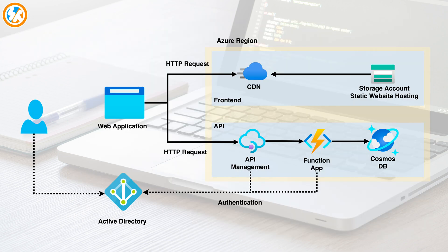Let's quickly go through the architecture we are considering. The backend is deployed to an Azure Functions app and is exposed to the public through API Gateway. Authentication is implemented with Azure Active Directory B2C tenants. We have an Azure Functions backend and a single page web application hosted in a storage account. The SPA is hosted as a static website and exposed to the public through an Azure CDN for better latency.